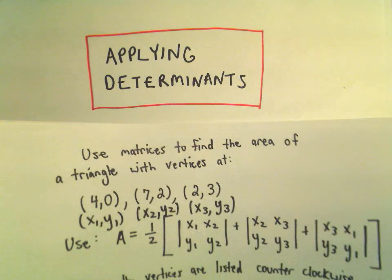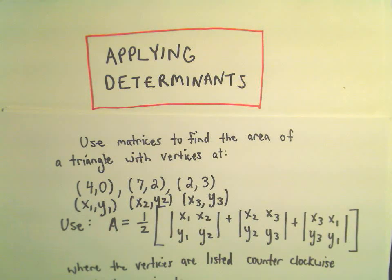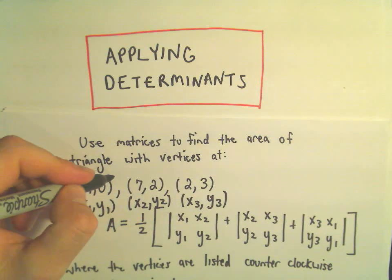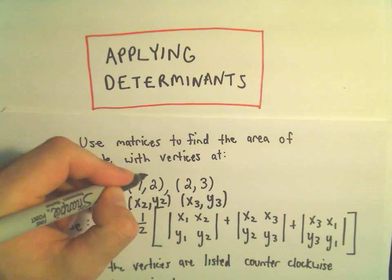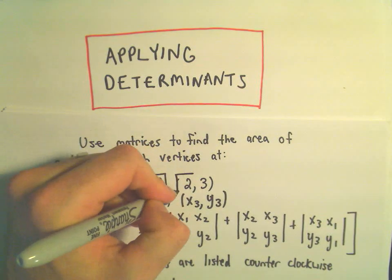Alright, in this video we're going to do an example of using determinants to find the area of a triangle. The triangle is going to have vertices at the point (4,0), (7,2), and (2,3).